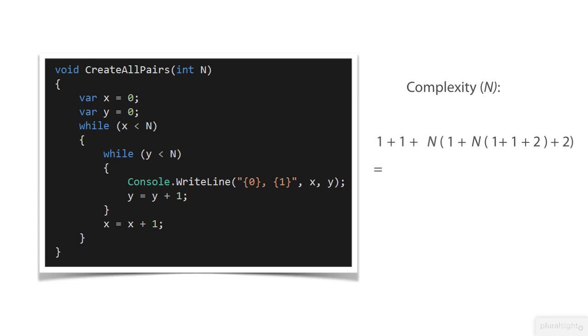Let's contract this a bit. 1 plus 1 gives 2. 1 plus 1 plus 2 gives 4. And 1 plus 2 gives 3. Let me remove all these spaces and multiply the n outside the parenthesis with the 3 and 4n from inside the parenthesis.